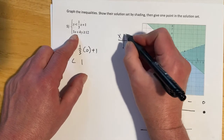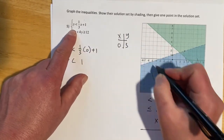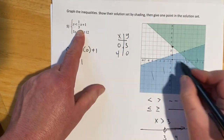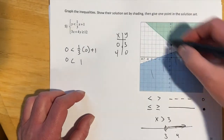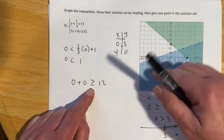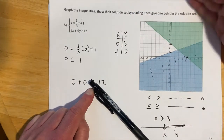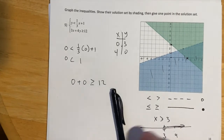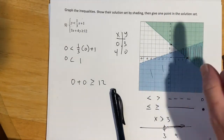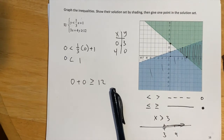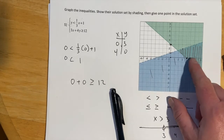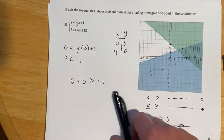For the second inequality in standard form, when x is 0, y is 3, and when y is 0, x is 4 — that defines the boundary. Using our test point: 0 plus 0 is not greater than 12, so we don't shade that side; we shade the other side. The solution set is the region where both shadings overlap, which is a small region. The computer handles drawing it — you draw the lines, click which side to shade, and submit. That overlapping region is called the feasibility region and is the solution set for this system of inequalities.